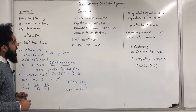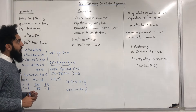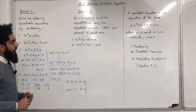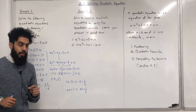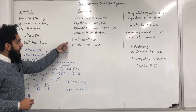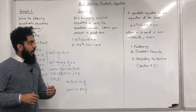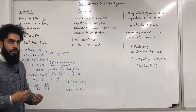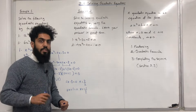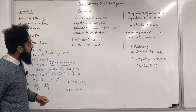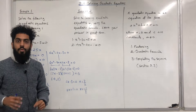Example number 2: solve the following quadratic equations by using the quadratic formula. Leave your answer in exact form. A lot of students use the quadratic formula and then round the answer — you can't do that in this case, you will lose marks. You need to keep your answer in exact form, that is, square root form.